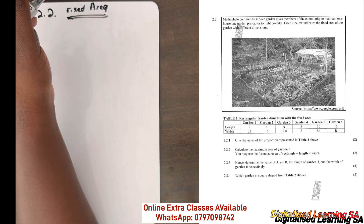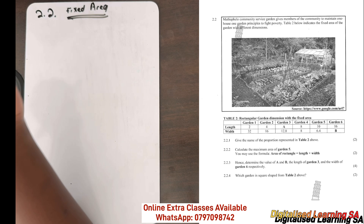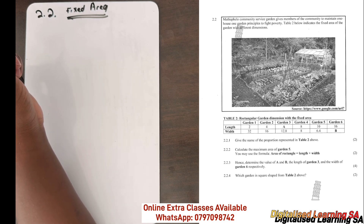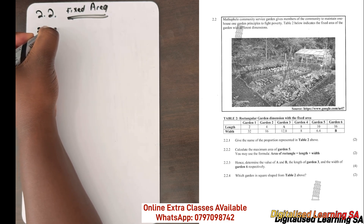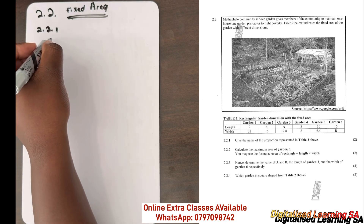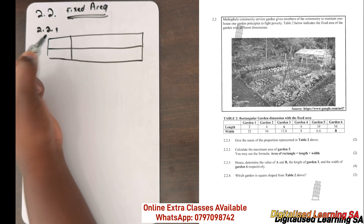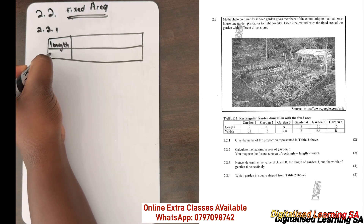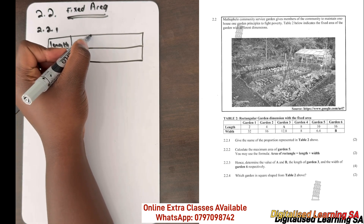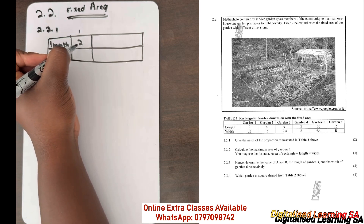Without wasting any time, let's go ahead and answer the set of questions for this scenario. We'll start with question 2.2.1, which says: give the name of the proportion represented in table 2. On our table we have the length and the width. For garden 1, the length is 2 and the width is 32.